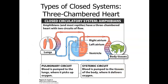Most reptiles and amphibians have a three-chambered heart with two circuits of flow. Oxygenated blood enters the left atrium, gets pumped out the left ventricle to the body tissues where it distributes oxygen and picks up carbon dioxide. It then returns to the right atrium, goes to the right ventricle, and is pumped back to the lungs for exhalation.